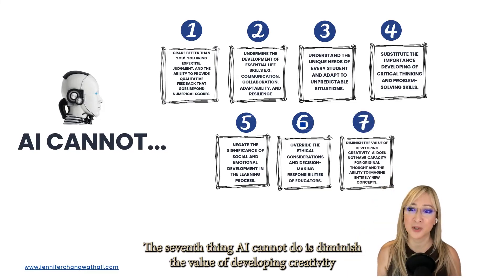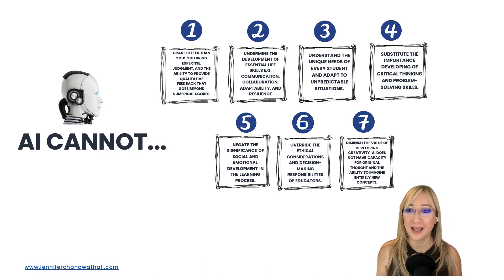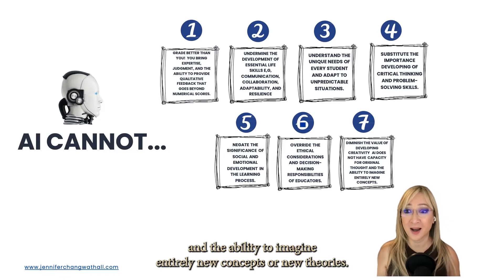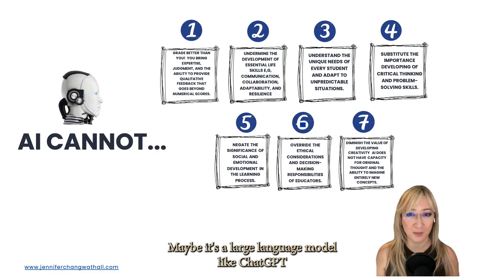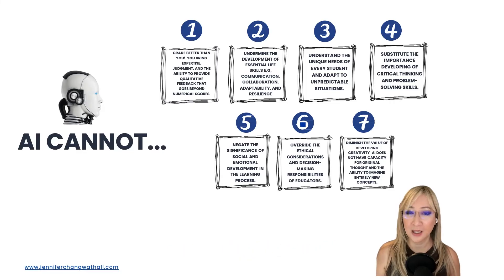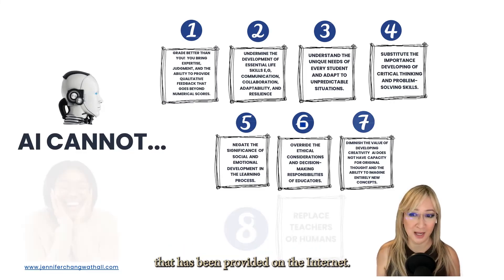The seventh thing AI cannot do is diminish the value of developing creativity, because AI does not have the capacity for original thought and the ability to imagine entirely new concepts or new theories. It basically draws on big data and utilizes algorithms to generate information — for example, a large language model like ChatGPT will generate language based on all the data that has been provided on the internet.